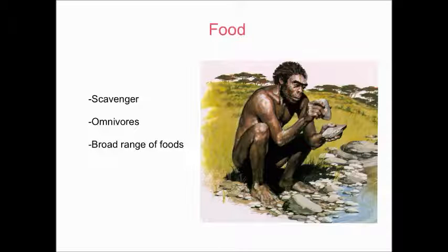The Homo habilis was a scavenger eating everything it could get its hands on, and it was also an omnivore and ate a broad range of foods.